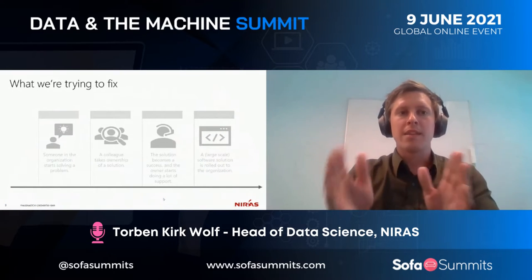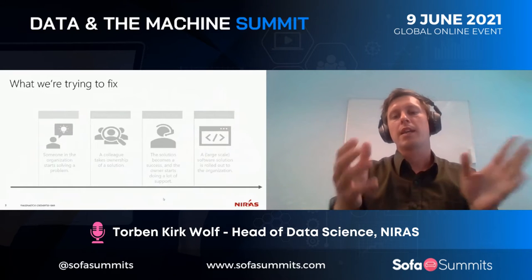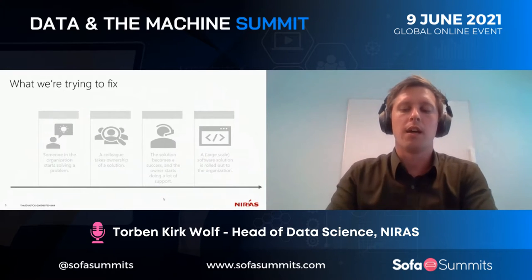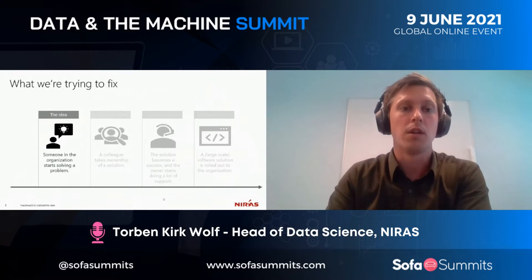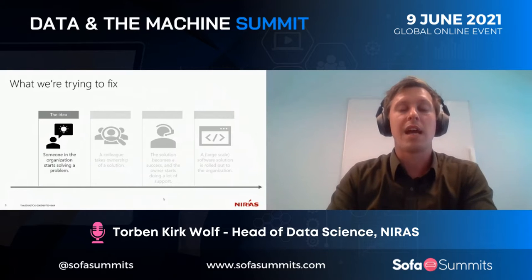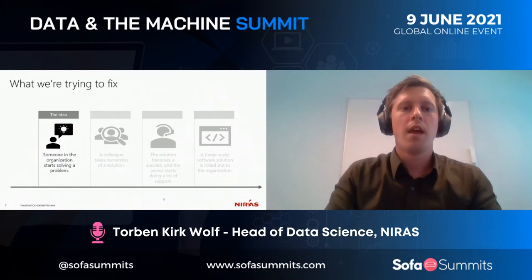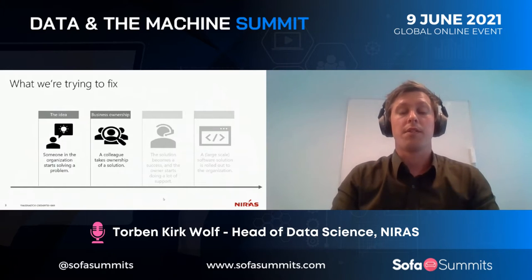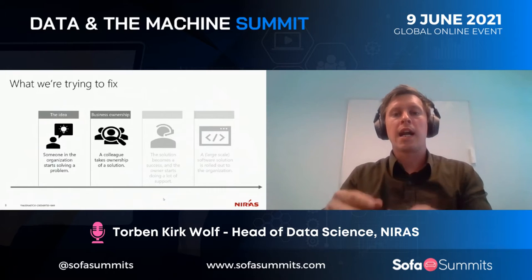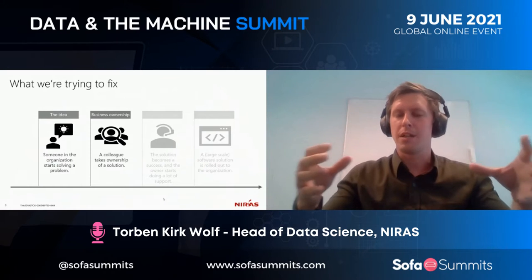Let me explain where this fits in what we are doing. We work in a process where people get data and need to give a solution to their end customer. First, someone in the organization starts solving a problem — they have an idea, they'll make a spreadsheet to handle their data in a certain way. If it's a good enough idea, there's going to be some business ownership of that idea. A colleague will say, 'That's brilliant, can I use that on my project as well?' And then what started on his local C drive grows to be something that more people rely on, and it becomes a little bit more business critical.